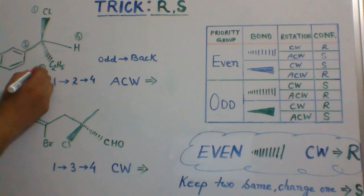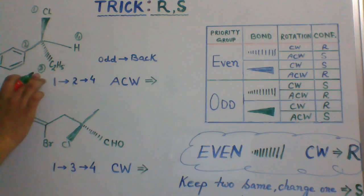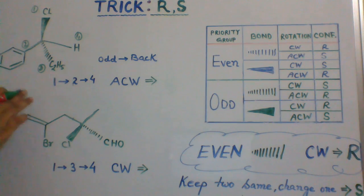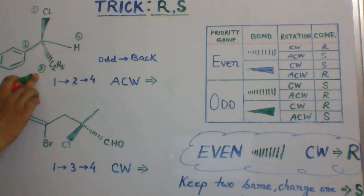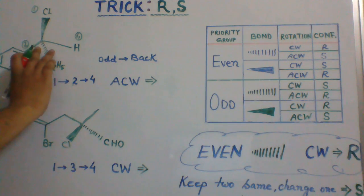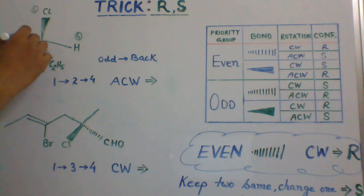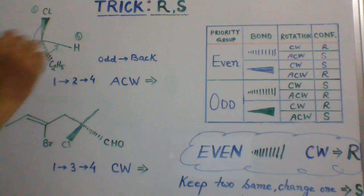The odd priority group — in this case ethyl — is pointing below the plane of the board. So, leaving this group, connect all the other three priority groups: one, two, four.